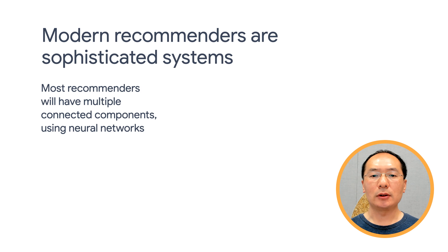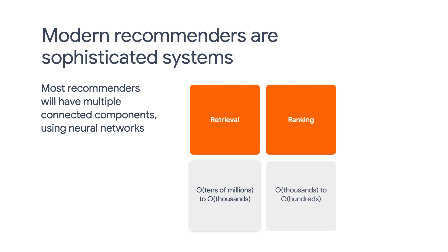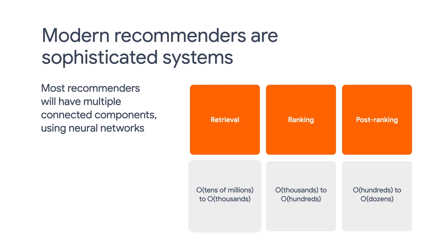Recommenders are sophisticated machine learning systems rather than individual models. Most applications will have multiple components instead of a single machine learning model. For example, on YouTube, the recommendations you see are a result of a complex dance of many individual models. First, you have the retrieval stage, which takes tens of millions of available videos and quickly narrows them down to about a thousand. Then you have the ranking stage, which narrows this further down to a couple of hundred. Finally, you have the post-ranking stage, which can help ensure diversity, freshness, and fairness, and reorganizes those into a set of valuable recommendations in the order of dozens. The reason it's broken into multiple stages is that ranking millions of candidates would be very expensive and the latency would not satisfy a production system.